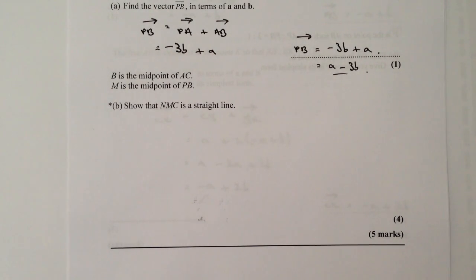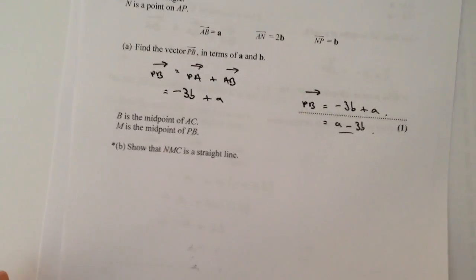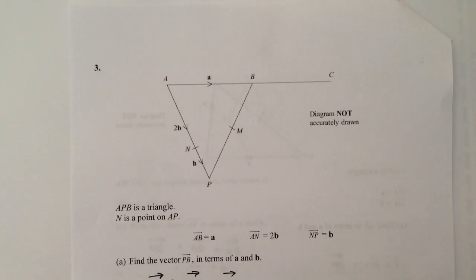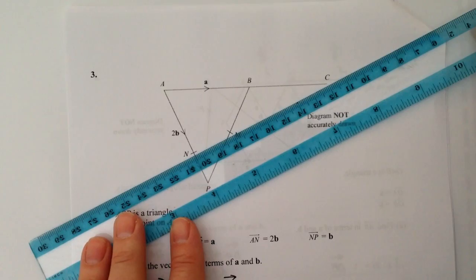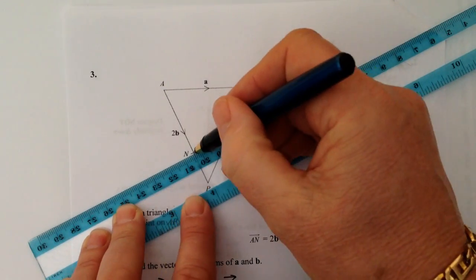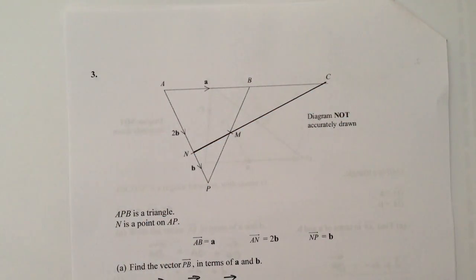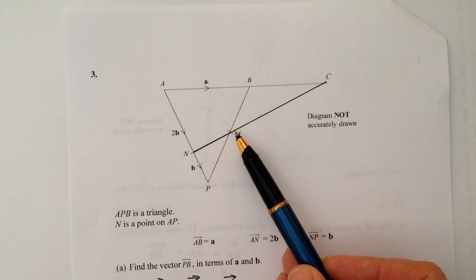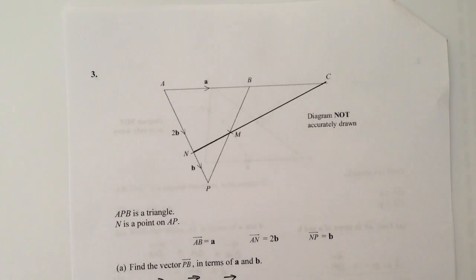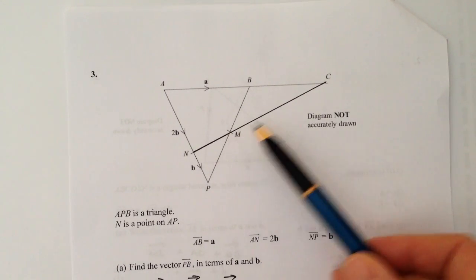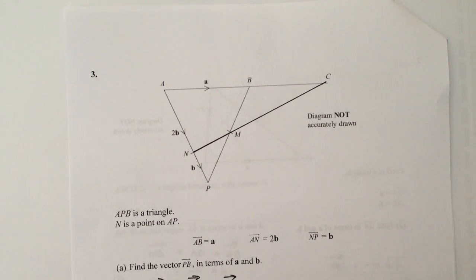What they want us to do is to show that NMC is a straight line. So let's just have a look at that. If we go back to the picture itself, what we're saying is that if we had a straight line that went through N, M and C, it would be a straight line like that. In order to show that, what we've actually got to say is that vector NM and vector MC will be either the same or a multiple of, in order for it to be a straight line.